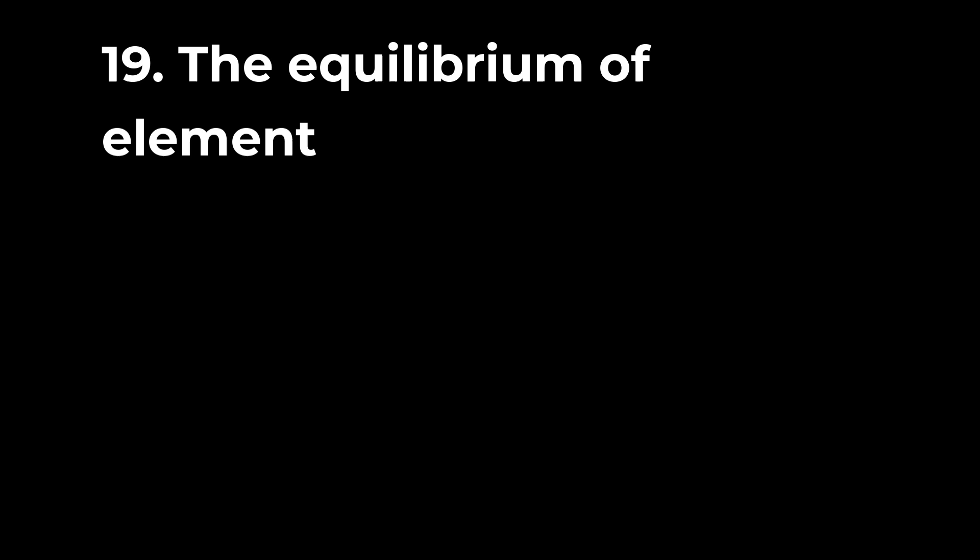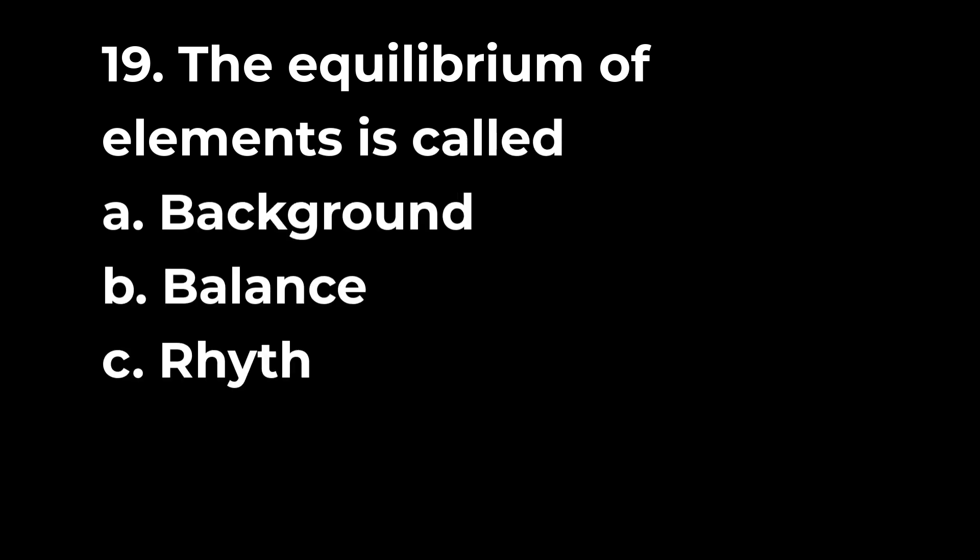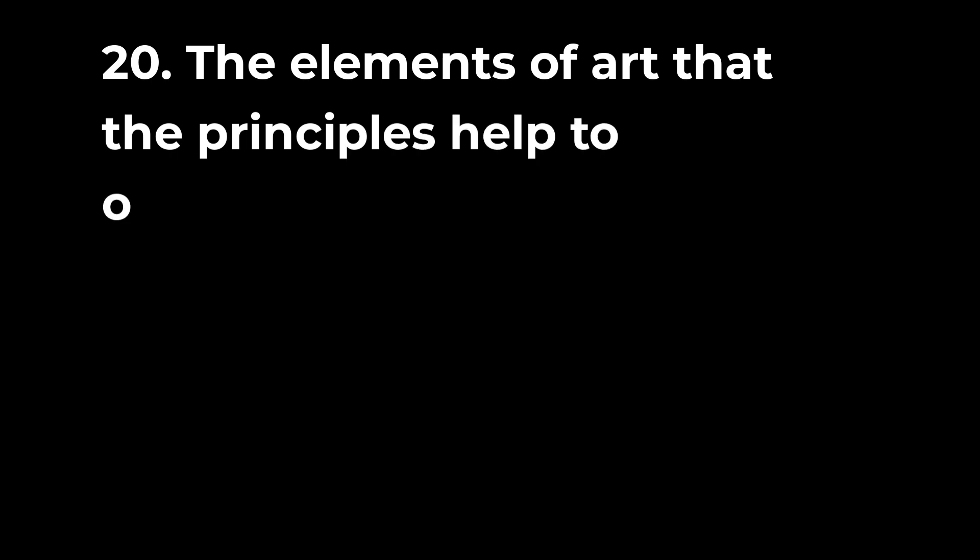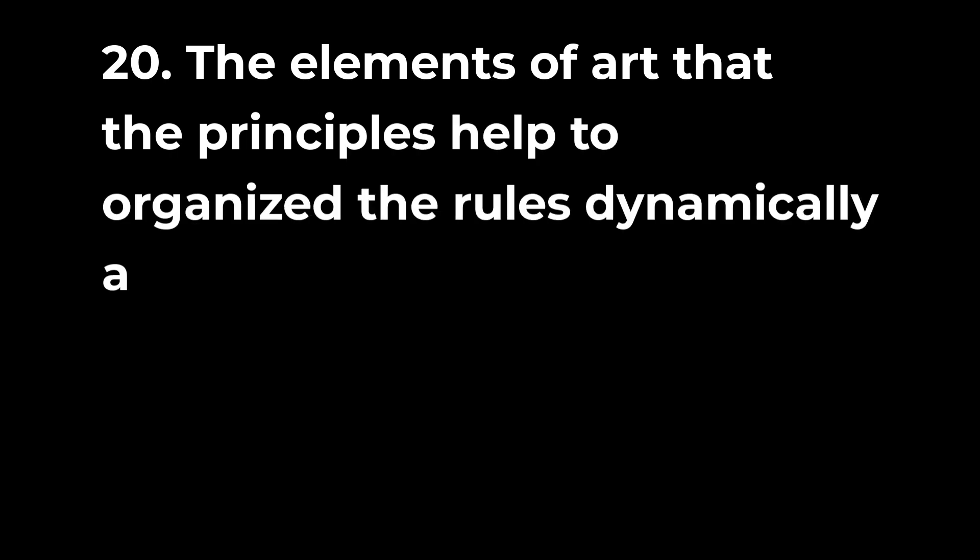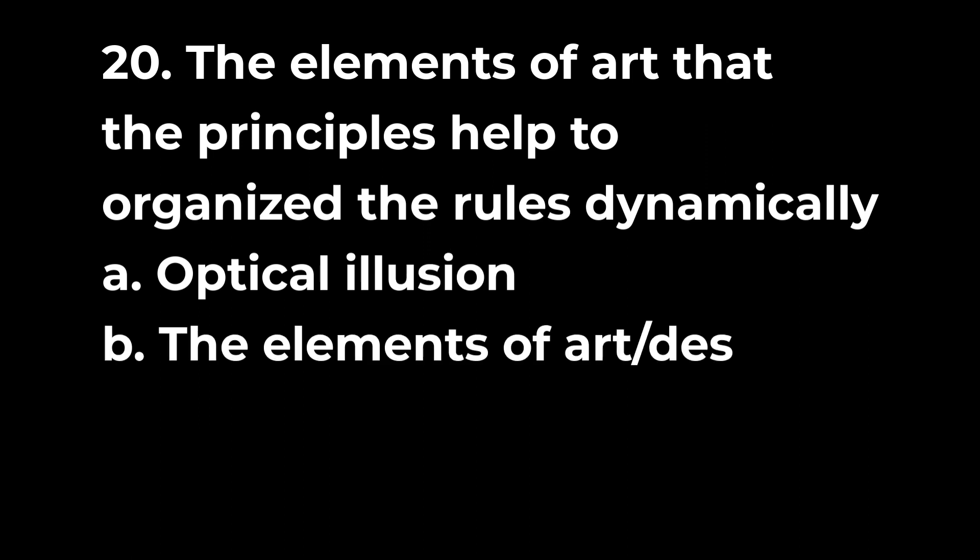Question 19: The equilibrium of elements is called a. Background b. Balance c. Rhythm d. Contrast. Question 20: The elements of art that the principles help to organize the rules dynamically a. Optical illusion b. The elements of art/design c. Principles of design d. Graphic design.